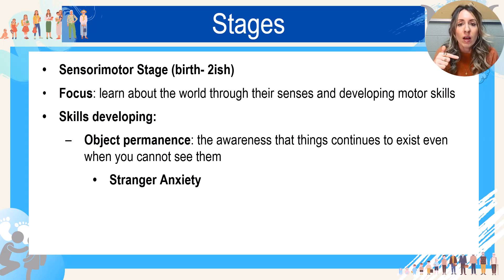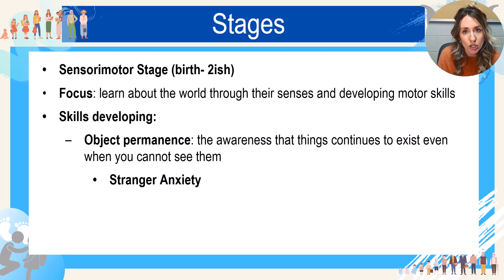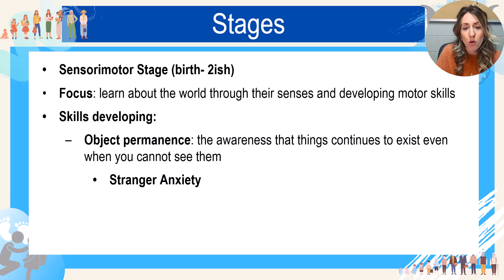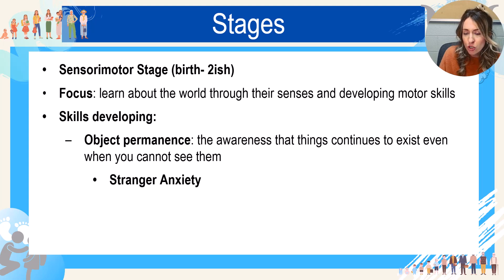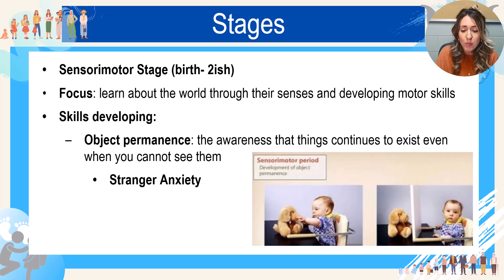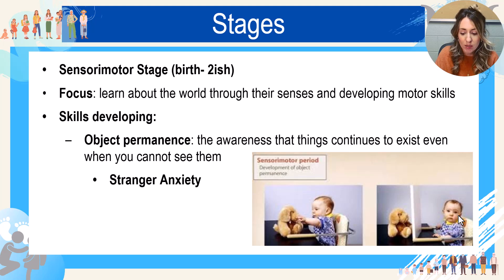Another interesting skill linked to object permanence is stranger anxiety. Usually between around eight and ten months, babies start to realize who a stranger is — the difference between who they know and don't know. If their mom or dad leaves them with a stranger, they want them to come back. That's linked to the awareness that things — and people — exist even when you can't see them. There's also a picture here of a kid who does not yet have object permanence: they're playing with a teddy bear, a wall is placed in front of it, and they don't try to look for it — they just get distracted and move on.